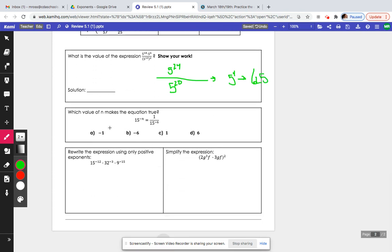And then, let's do this one really fast. Which value of n makes the equation true? Well, if it's a negative, this is actually supposed to be a plus sign on yours. I changed it. And so, if it's a negative, and it's switching to the bottom, and it's becoming a positive, that means our answer has to be D.